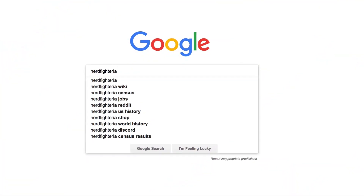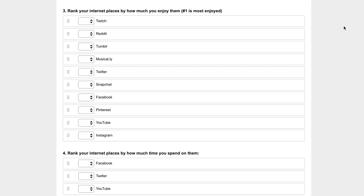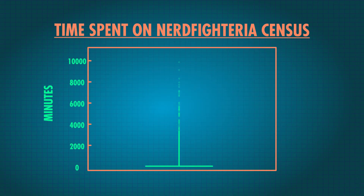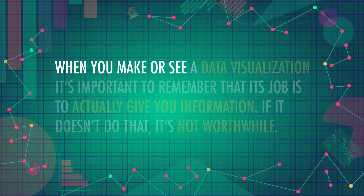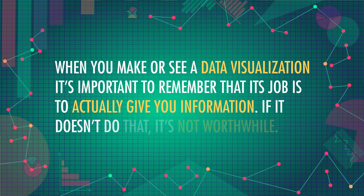For all the nerdfighters out there, you may have heard of Hank's annual Nerdfighteria census. You might wonder how long it takes to fill out — you don't have all day. So you use your new dataviz skills to create a boxplot of the data. But you can't even see the box or the whiskers through all those extreme values. It looks like some nerdfighters were very thorough, or very distracted — 8,000 minutes is 133 hours. The plot isn't wrong per se, but it's not very informative since we can't get much useful information from it. When you make or see a data visualization, it's important to remember that its job is to actually give you information — if it doesn't do that, it's not worthwhile.